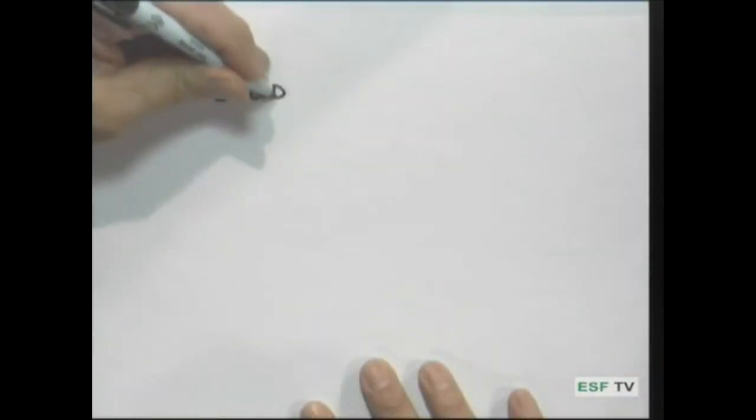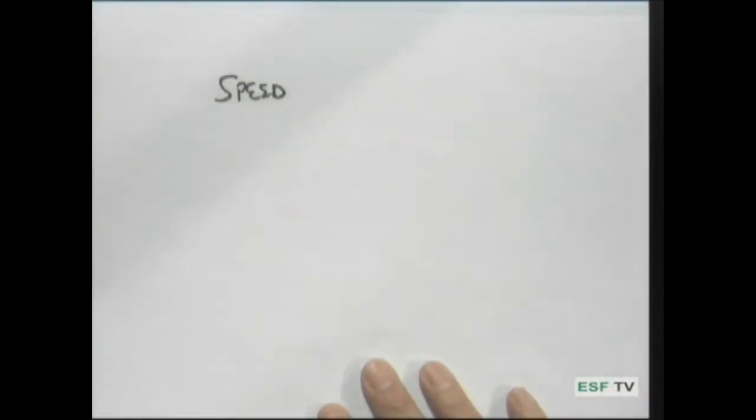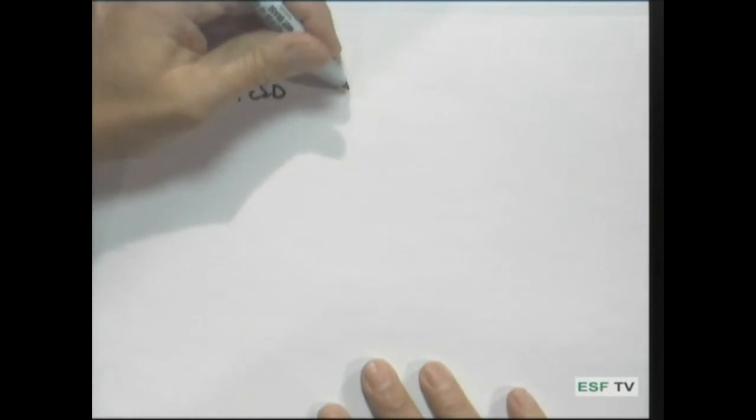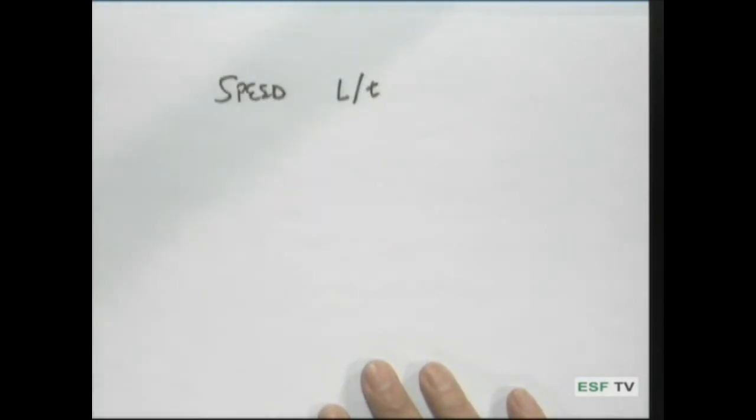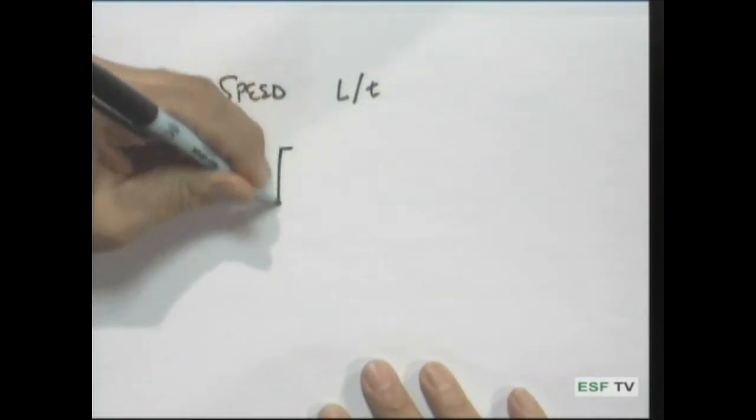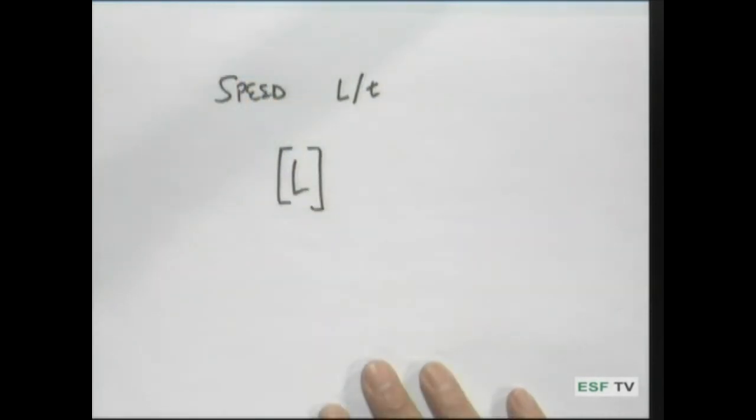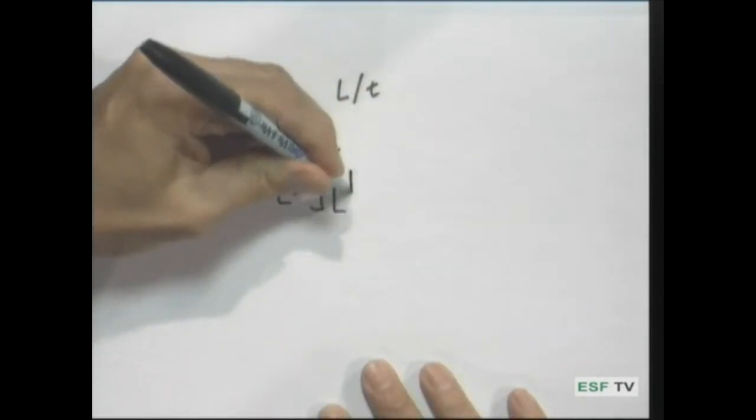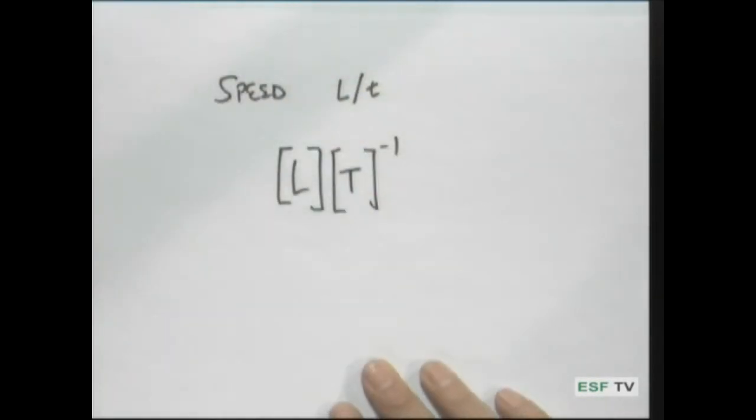There are other sorts of these derived dimensions that we can talk about. Here's a simple one. Speed, for example. Well, we know that that's going to be the ratio of a distance over a time. And so, what we can do is we can express the dimensions of speed as a length times the inverse of time or length to the time minus one.